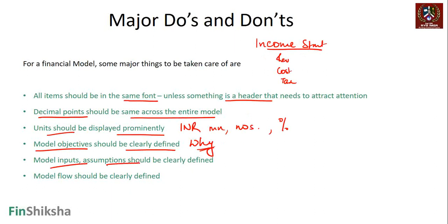Model objectives should be clearly defined - which is, why does the model exist? Why are we building this model? That has to be clearly defined. Model inputs and assumptions should be clearly defined - what are we trying to capture? And then model flow should be clearly defined as to how we are basically moving from an input to the output. If we can keep these questions in mind, the chances of errors in financial models will reduce considerably.